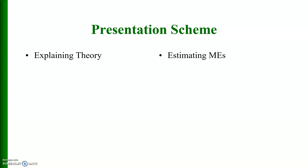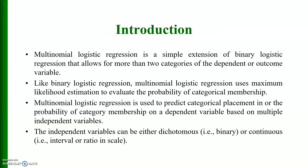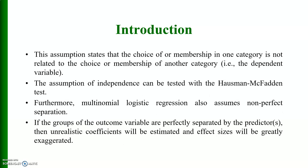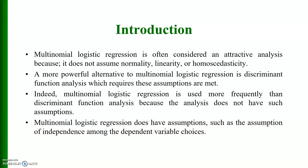Multinomial logistic regression is an extension of binary logistic regression which allows for more than two categories of the dependent variable. Multinomial regression uses maximum likelihood estimation to evaluate the probability of categorical membership, and it is used to predict categorical placement or the probability of category membership on a dependent variable based on multiple independent variables. The independent variables can either be dichotomous or continuous, that is interval or ratio scale.